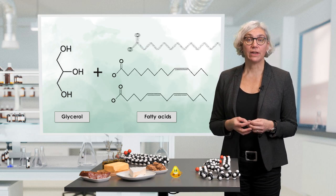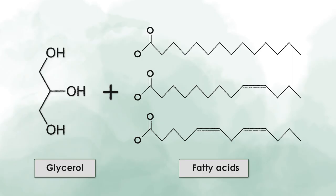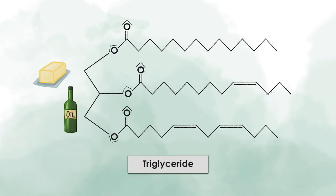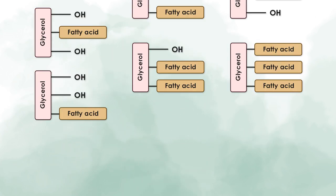Fatty acids contain a straight carbon chain of different lengths with a carboxyl group at the very end. When the fatty acids are attached to the glycerol backbone, we call it a glyceride. Optionally, one, two or three fatty acids may be attached to the glycerol backbone.